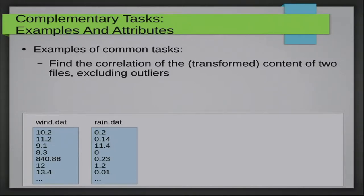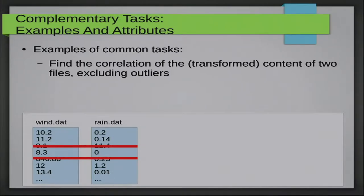Here's the first example. Suppose we have two files containing meteorological data — one with wind velocity measurements, one with rain volume measurements. We'd like to exclude outliers: take values that are way too big and wipe them out. After that, we just want to find a correlation between the two to see whether wind and rain have anything to do with each other. If they do, then we'll start analyzing further.